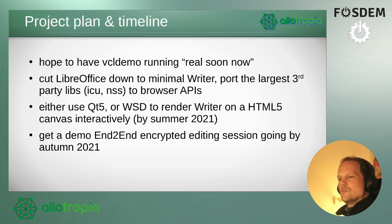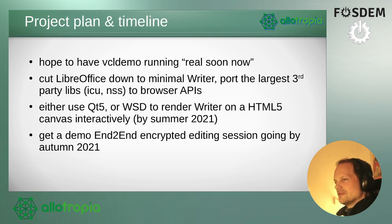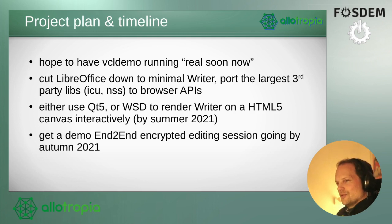Quickly, the outlook and the plan: we hoped to have the VCL demo running — the first pixel in the browser as promised last year. The next step would be cutting LibreOffice down to a really minimal Writer — no other applications, only one or two filters like ODT and perhaps DOCX — and getting the largest third-party libraries, which are ICU, NSS, and a number of others, moved over to browser APIs to see how small we can get the binary. Next, either use Qt or the WebSocket daemon from Collabora Online to render Writer in the browser purely on an HTML5 canvas interactively. Goal for that is summer this year. And finally, to get a demo with end-to-end encrypted editing of an ODT document going — the target for that is the LibreOffice conference, if and when that happens in autumn 2021.